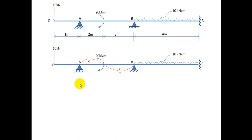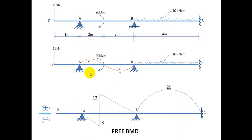Our convention is TCS — where T stands for top of the beam, C for compression, and S for sagging. So here, where the top of the beam is in compression, that portion is in a sagging moment. And this part, being opposite, is having a hogging type of bending moment. While drawing a free bending moment diagram, the positive side is drawn on the upper side and the negative side is drawn below the baseline. Drawing a free bending moment diagram means we consider beam AB and beam BC each as a simply separated beam.